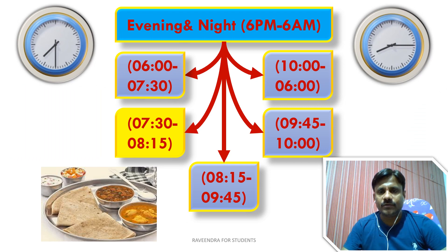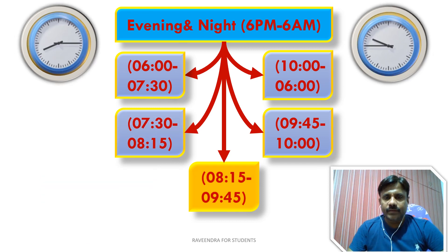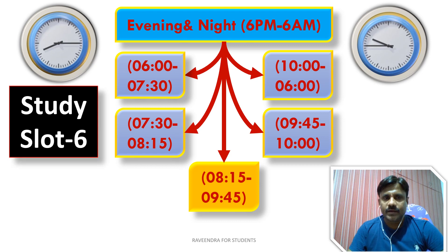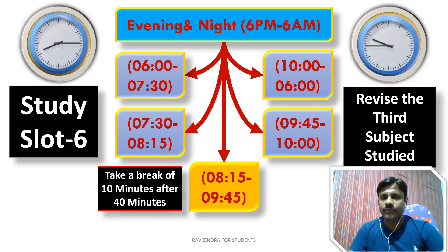From 7:30 to 8:15 p.m. is reserved for dinner — 45 minutes. After dinner, from 8:15 to 9:45 p.m. — one and a half hours — is Study Slot 6, the last study slot of the day. Don't take a new subject here either; revise the third subject. You have now studied three subjects and revised all three. Take a 10-minute break after every 40 minutes of study.